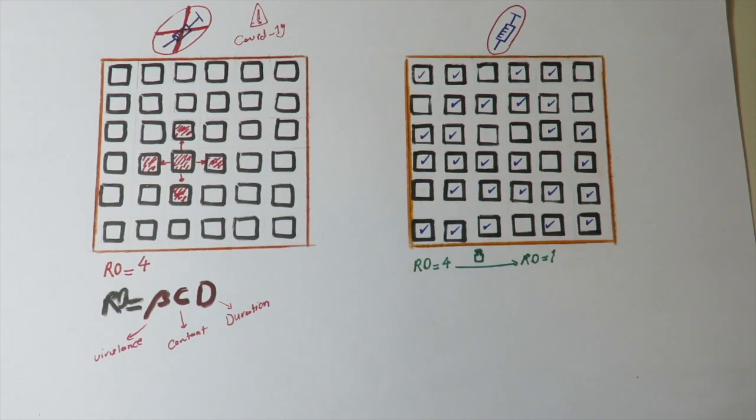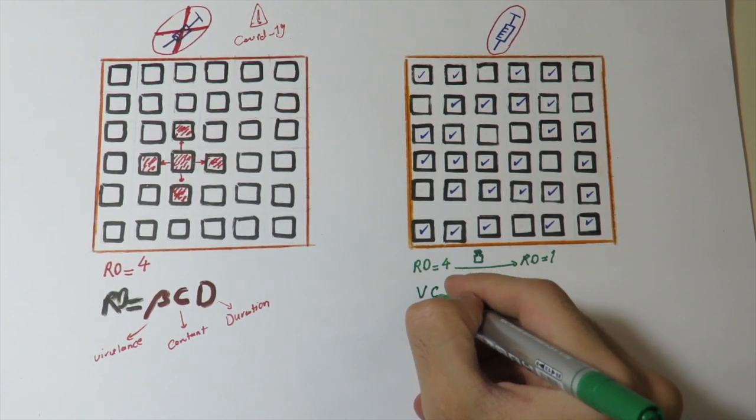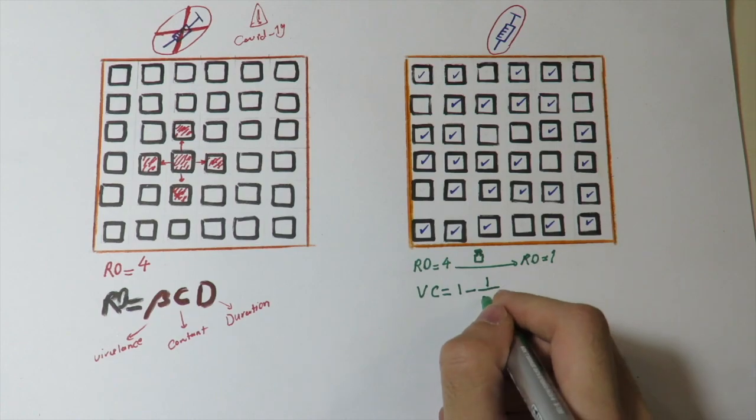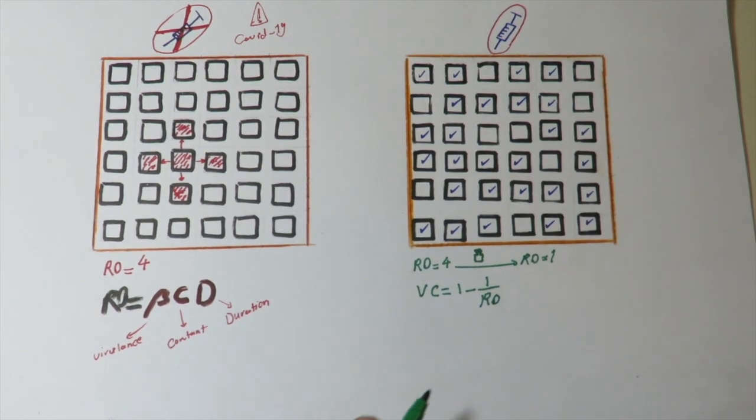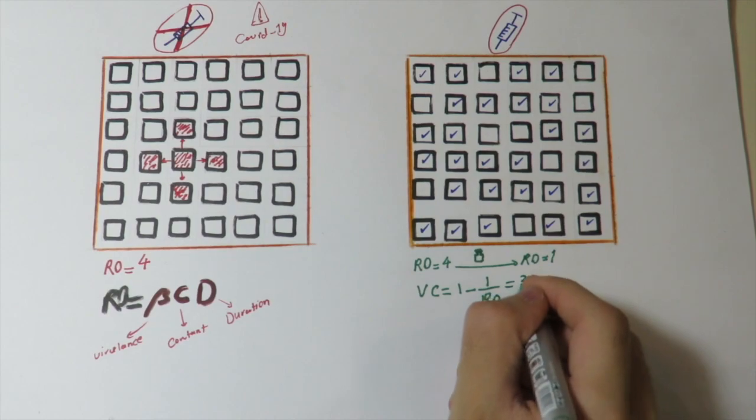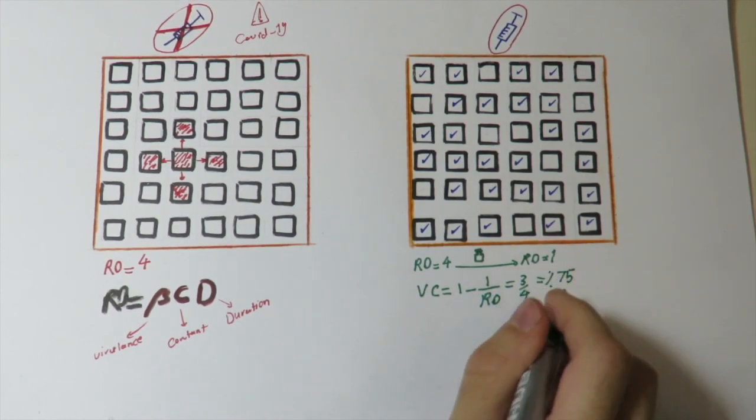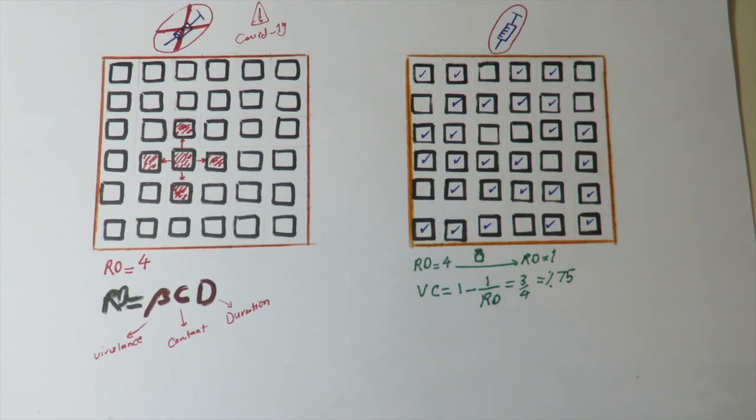So in this case, the vaccine coverage needed is 1 minus 1 divided by R0, which will be 75%. So you see the next picture, the picture on the right, whose people are vaccinated and every three out of four people is immunized by vaccination.